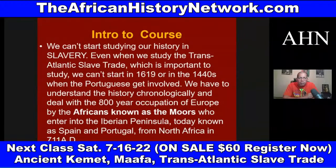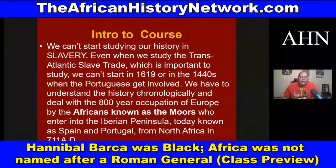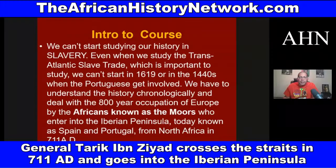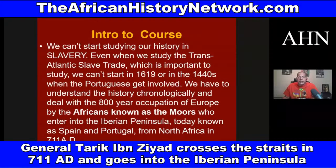We have to understand the history chronologically and deal with the 800-year occupation of Europe by the Africans known as the Moors, who entered the Iberian Peninsula — today Spain and Portugal — from North Africa in 711 AD, led by Tariq ibn Ziyad. They took teachings from the Nile Valley region of Africa into Europe, and it was these teachings that brought Europe out of the dark ages. Europe was cast into the dark ages when the western portion of the Roman Empire was crushed by the Vandals and Visigoths in 476 AD.